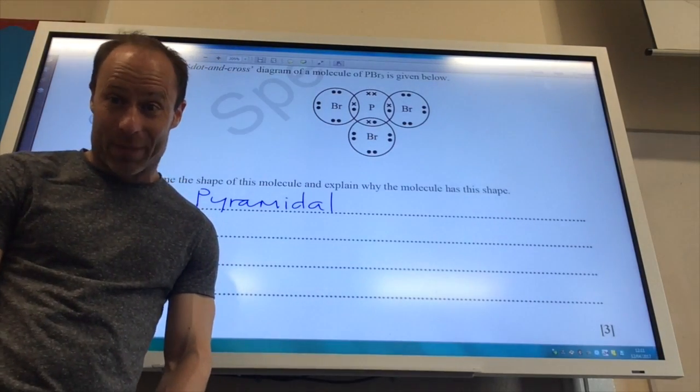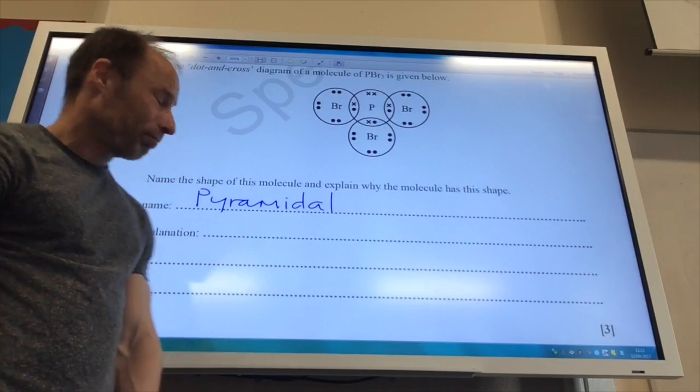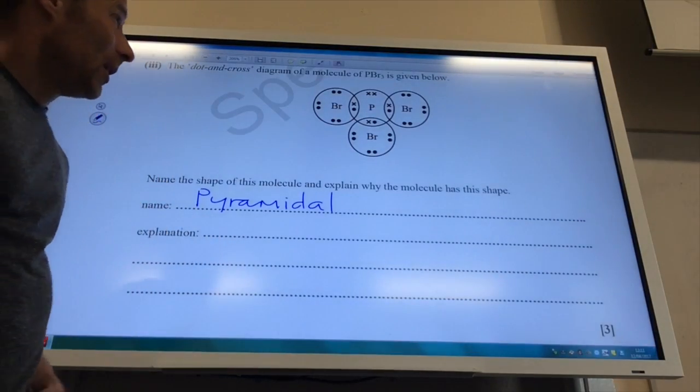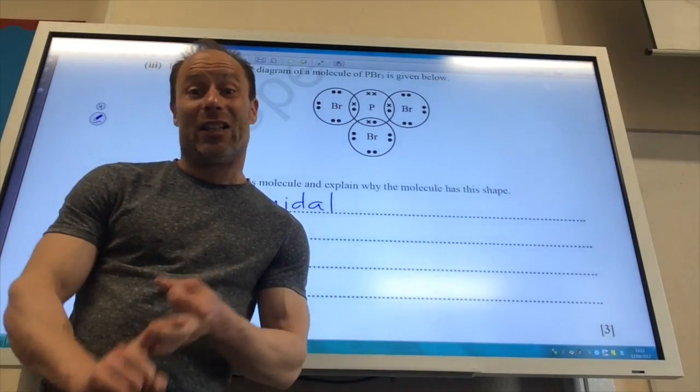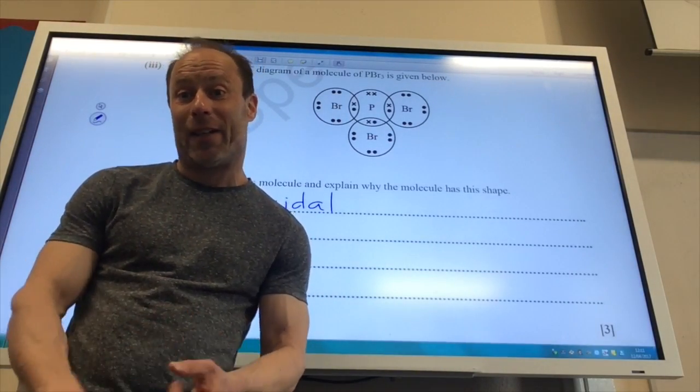Now they want me to name the shape and explain why it has that shape. So first of all we're going to name the shape. It's going to be pyramidal. And why is it pyramidal? So the key things to always say, how many bonding pairs, how many non-bonding pairs, and then talk about pairs of electrons repelling. So here we go.